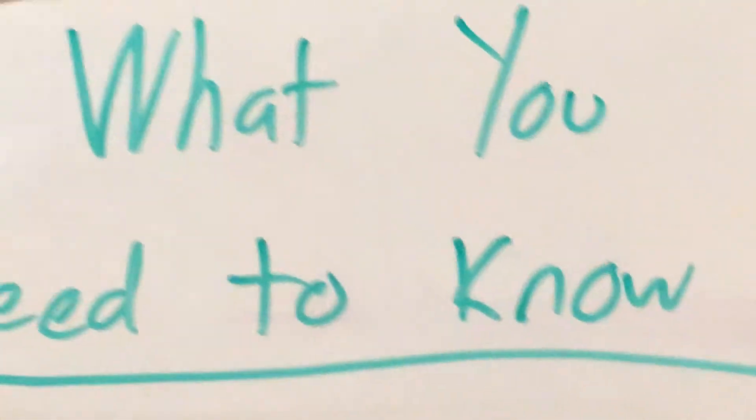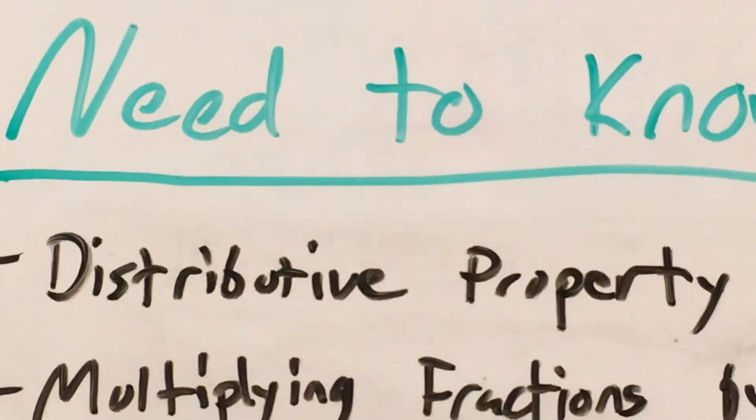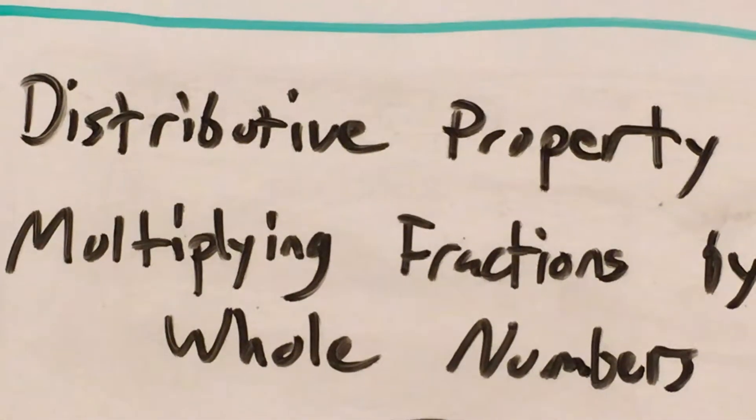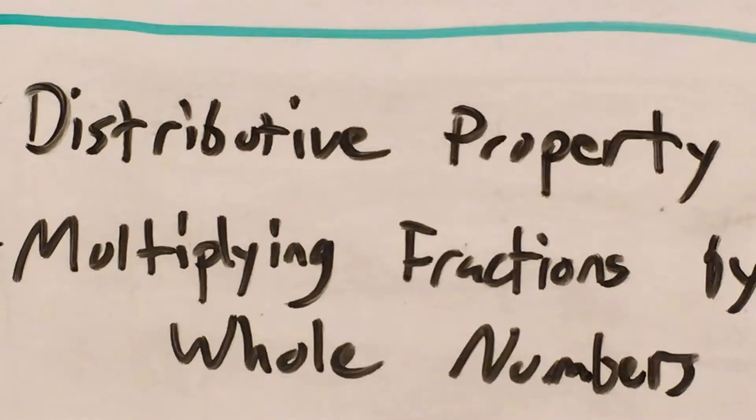So in order to do a question like this well, you'll need to know about the distributive property, but we're also going to have to do some multiplying fractions by whole numbers when we actually go ahead and use the distributive property. So this question kind of tests you on two skills in one. North Carolina loves to do that with their math questions.